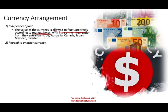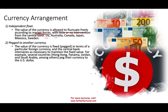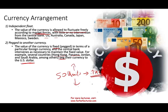Another system is called the peg system — peg to another currency. Here the value of the currency is fixed in terms of a particular foreign currency, and the central bank intervenes as necessary to maintain that fixed value. For example, countries such as Hong Kong, Panama, Jordan, and Saudi Arabia peg their currency to the US dollar — for instance, 50 units of their currency equals one USD. If prices move, the central bank will buy or sell local currency to bring it back to 50 units per dollar.